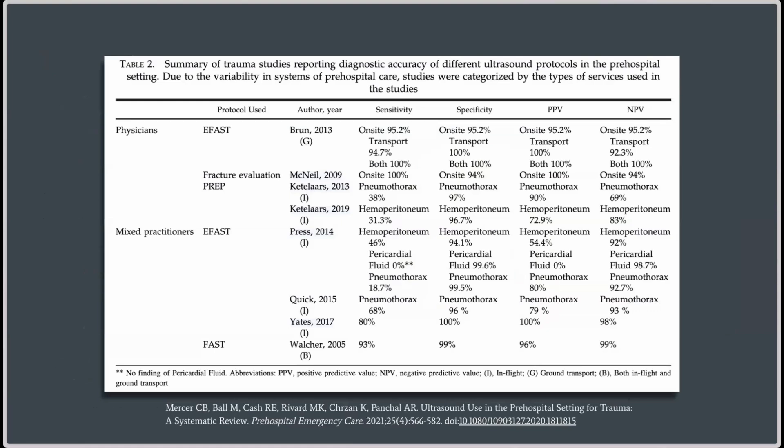This is a review done a few years ago looking at different types of ultrasound protocols under different settings. We can see the G and I categories - G is ground and I is in-flight, like a helicopter. You can see that the sensitivity and specificity - the accuracy of being able to detect most things - are pretty good. This study supports the idea that practitioners could successfully use ultrasound in those settings.